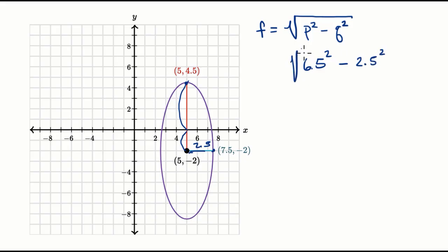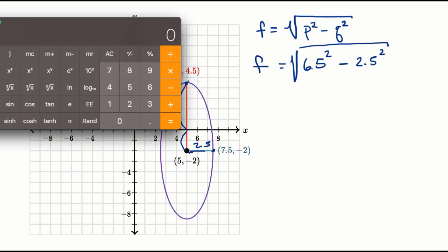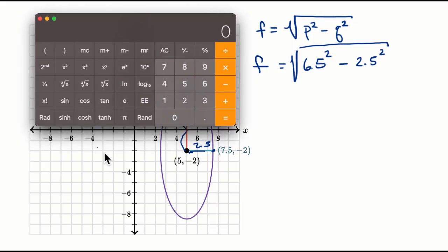And then we're going to take the square root of all of that to figure out the focal length. So let me get the calculator out. 6.5 squared minus 2.5 squared, and then you take the square root of that, you just get six.